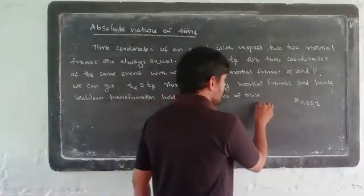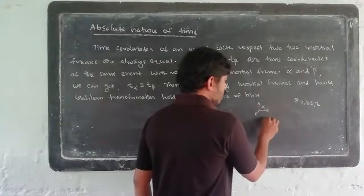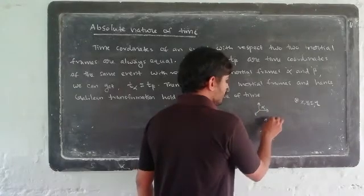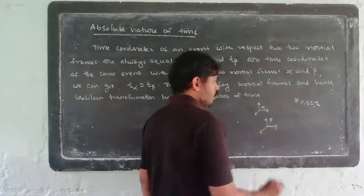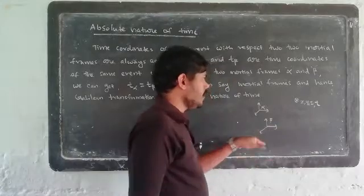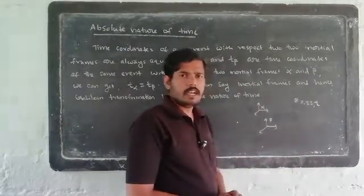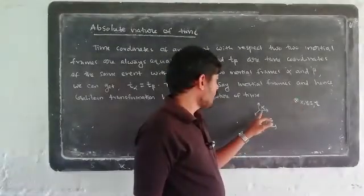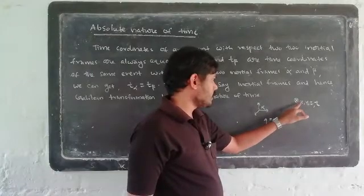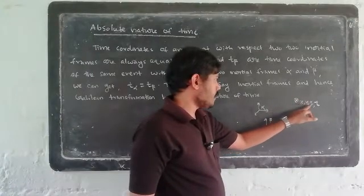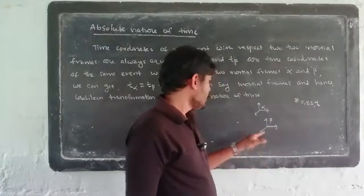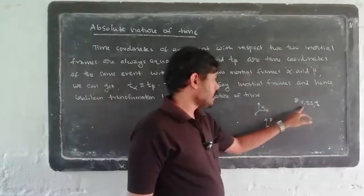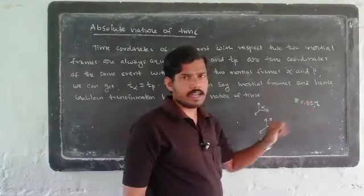Consider frame alpha and another frame beta. These two frames are different. For frame alpha, the coordinates are x-alpha, y-alpha, z-alpha, and t-alpha. For frame beta, the coordinates are x-beta, y-beta, z-beta, and t-beta. These are the respective coordinates of each frame.